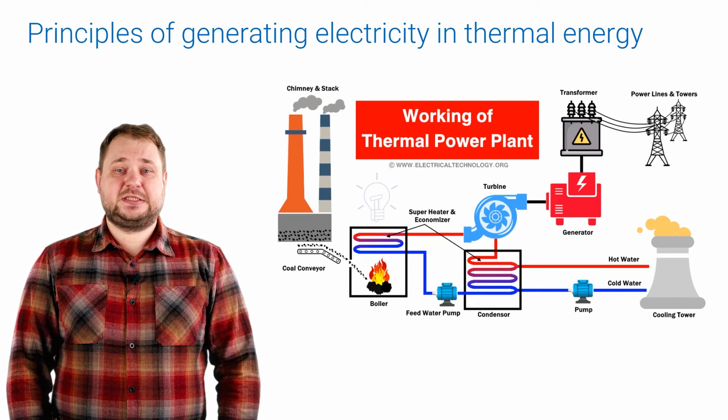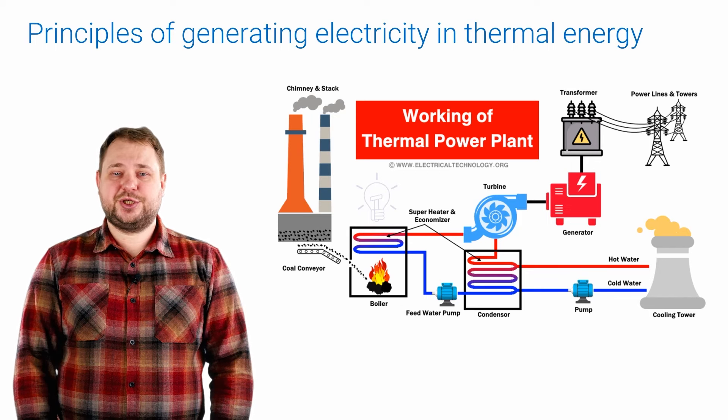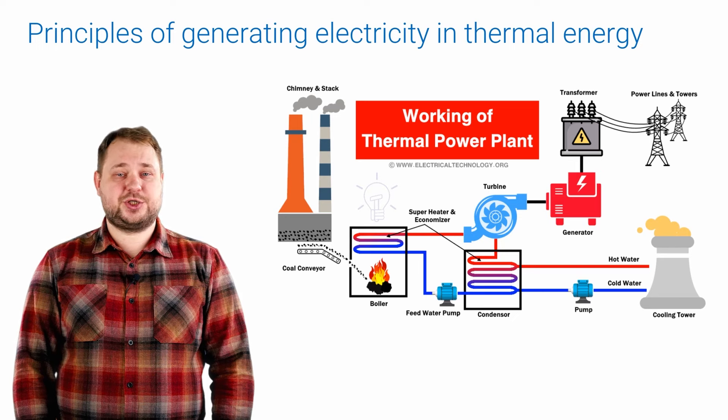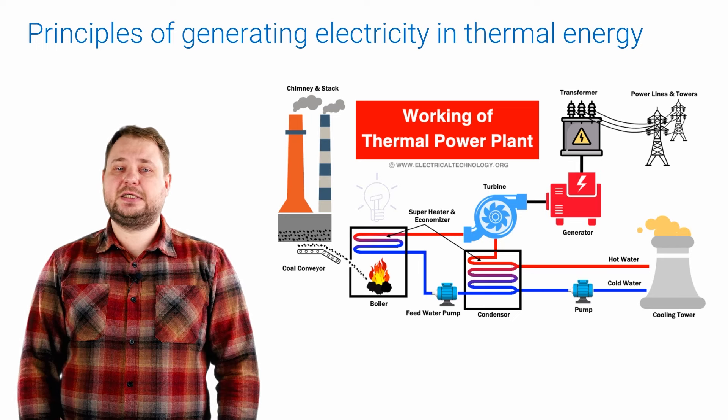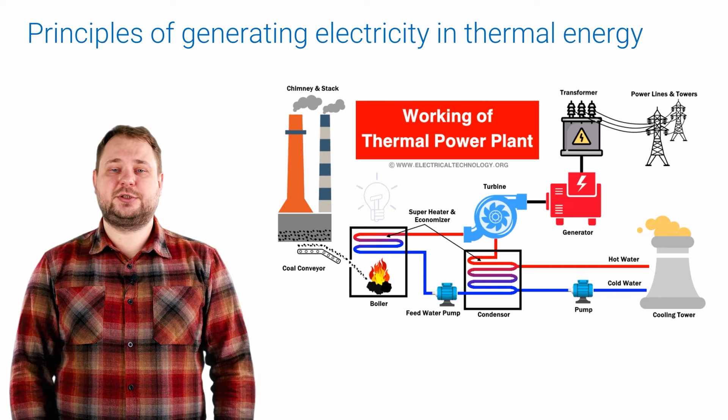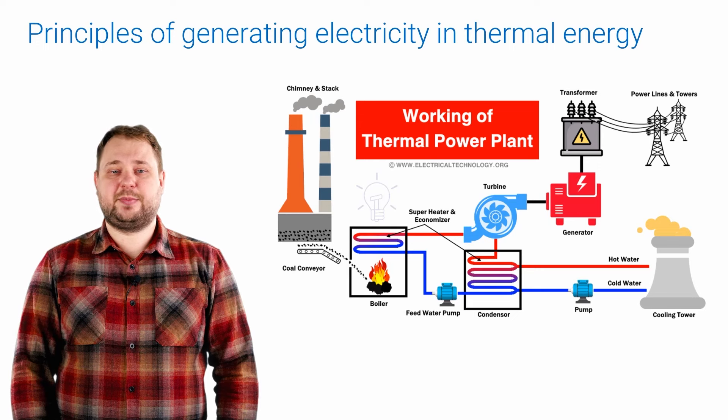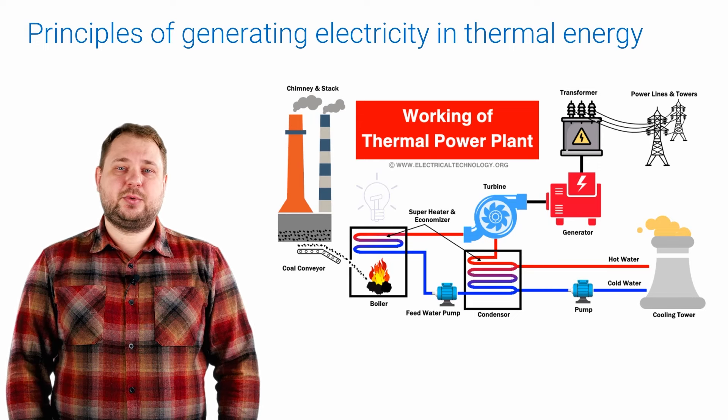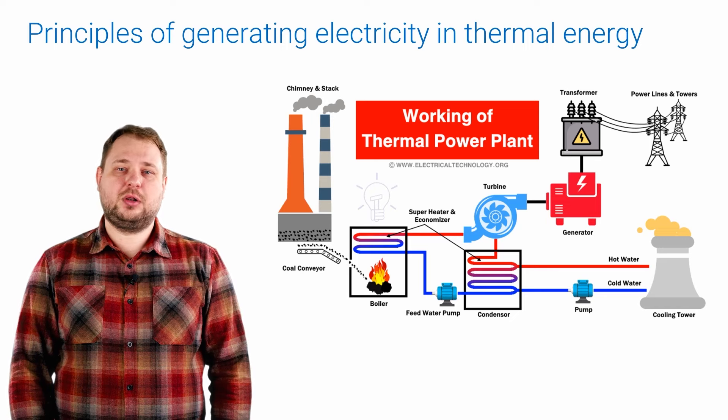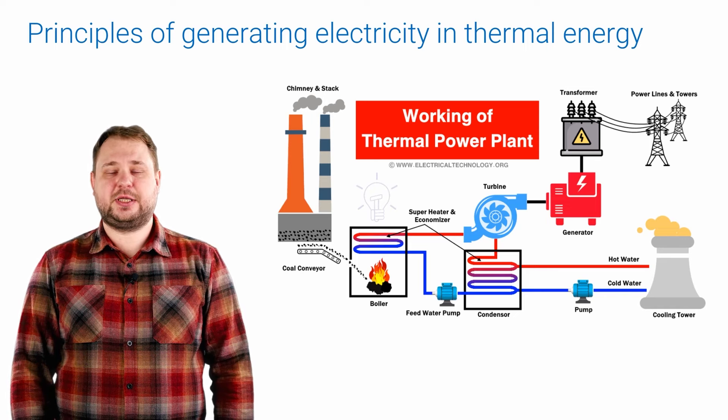The operation of condensing power plants is based on the use of thermal energy which is realized during the combustion of fuel to convert it into mechanical energy and only then into electrical energy. The main components of the TPP include a boiler in which fuel, usually natural gas, coal, oil or wood is burned, releasing thermal energy.